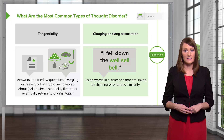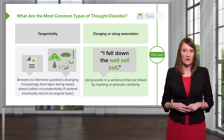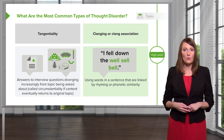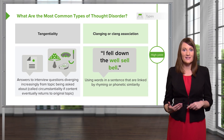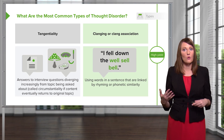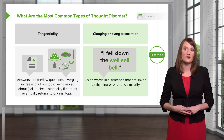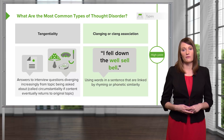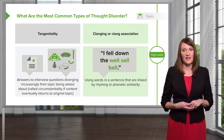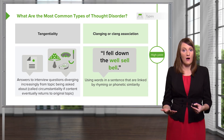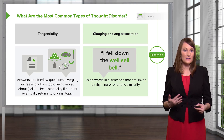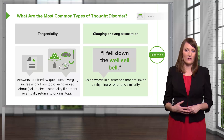Clanging or clang associations is another type of thought disorder where words are used in a sentence linked together by rhyming or phonetics. Here's an example of what a patient might say: "I fell down the well, cell, bell." Things rhyme but they don't really make any sense used together.